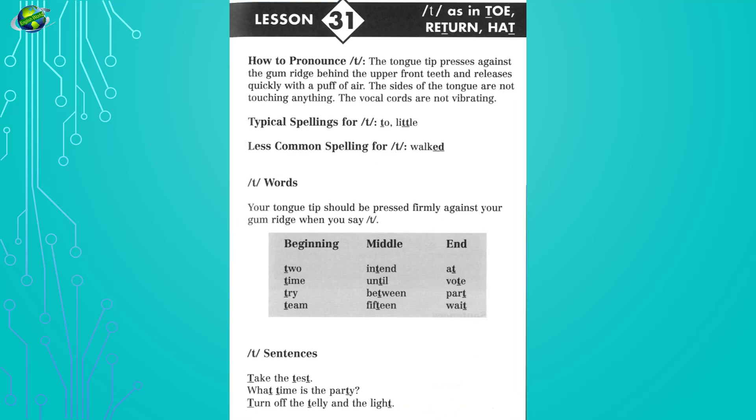Lesson 31: T as in toe, return, hat. Listen and repeat. To, time, try, team, intend, until.